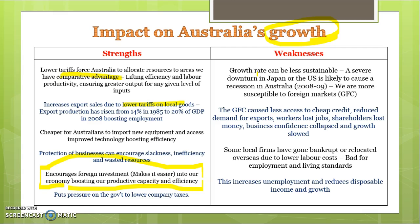A global financial crisis reduces demand for our exports, leads to job losses, and can result in shareholders losing lots of money — particularly those with large superannuation balances — slowing growth in Australia. Some local firms have gone bankrupt or relocated overseas because they can't compete with overseas companies. Summarising the weaknesses for growth: globalization makes us less sustainable and more susceptible to problems in other countries, which can reduce exports, cause job losses, hurt shareholders invested in foreign companies, lead to Australian businesses moving overseas, and result in increased unemployment and decreased incomes for Australians.